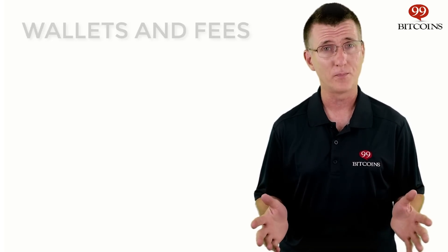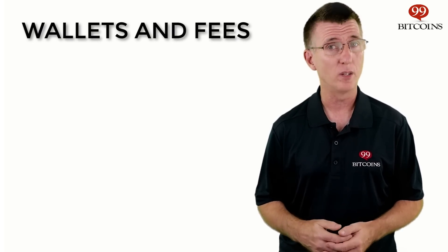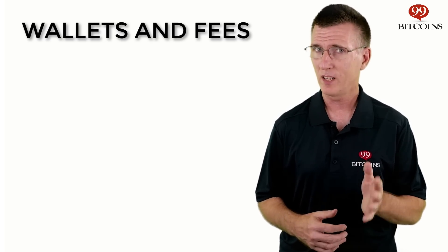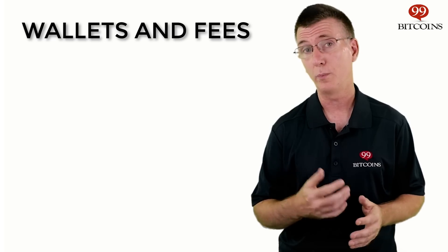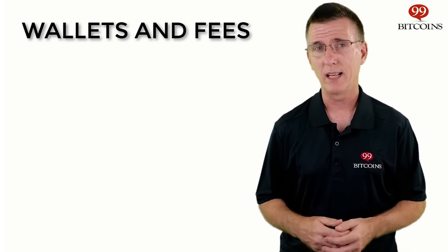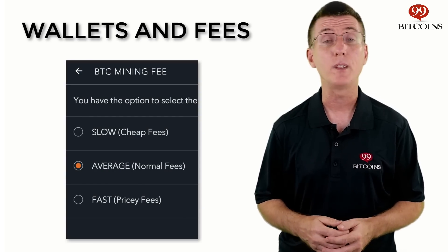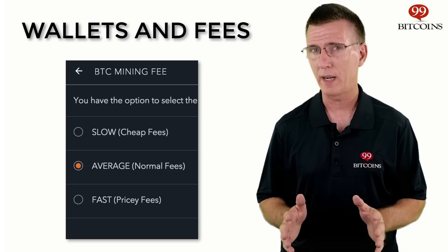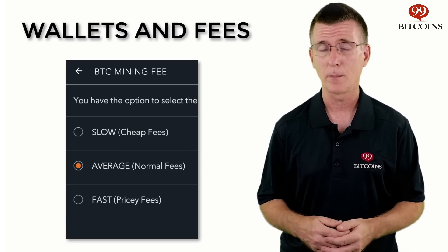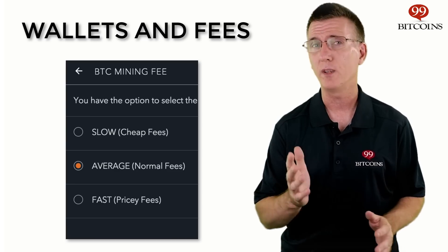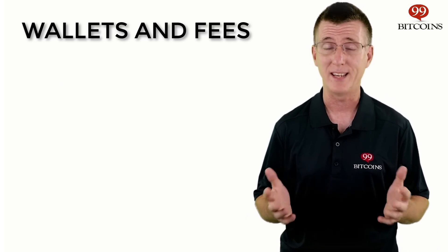Now let's talk about how bitcoin wallets deal with fees. Wallets attempt to recommend a reasonable fee based on the current and recent levels of activity of the bitcoin network. Some wallets and services manage fees poorly and overbid fees, which in turn drives up the fees for everyone else. Most wallets allow you to adjust your fees, or at least set a general fee preference like low, medium, or high. To choose the right fee, you'll first need to know your transaction size. If your wallet supplies you with that info, you can use a fee rate estimation table to figure out how much you need to pay to be included in the next block.